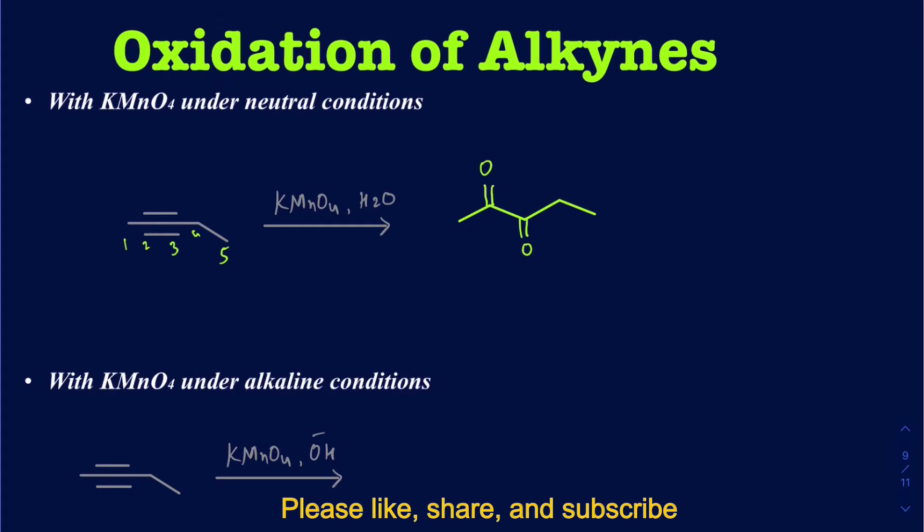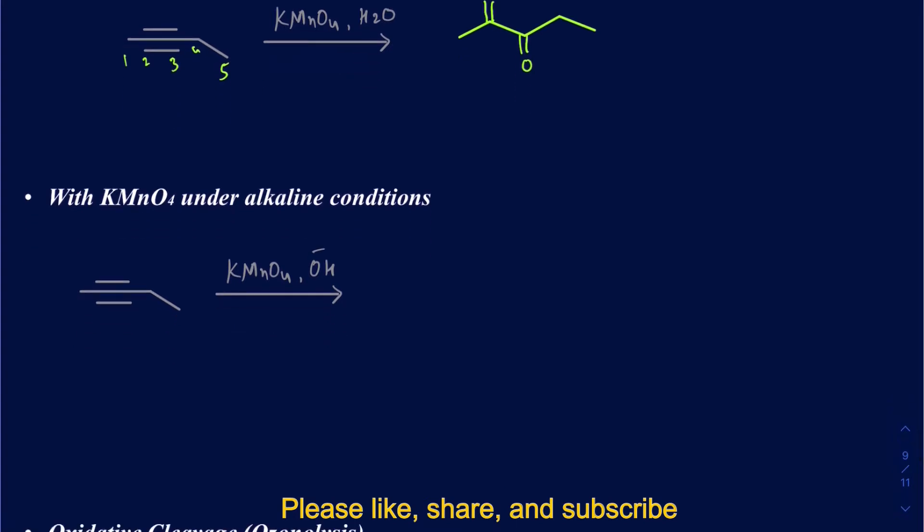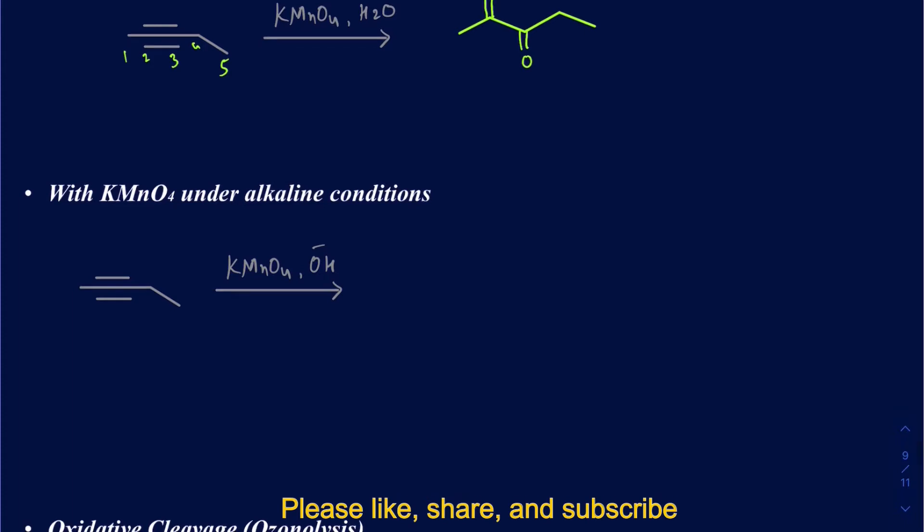If you do the same but now under basic conditions or alkaline conditions, the products are going to be slightly different where you actually break this triple bond. Then you're going to have two molecules, and I can draw those two molecules. One of them is going to be what you have on the left side. On that left side, you're going to have two carbons, and those two carbons are going to be making a carboxylate ion there. I'm going to have a minus there because you're doing it under basic conditions. You're not going to be protonating those yet, and then K-plus there.